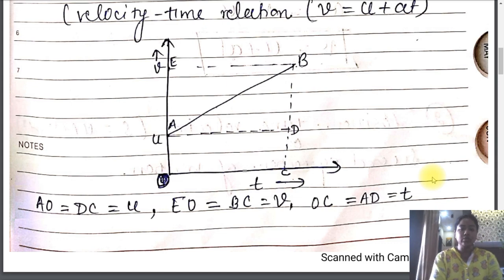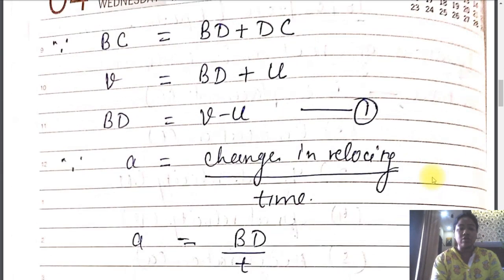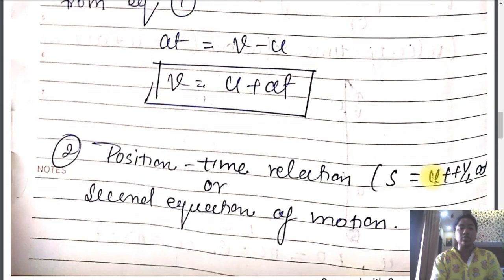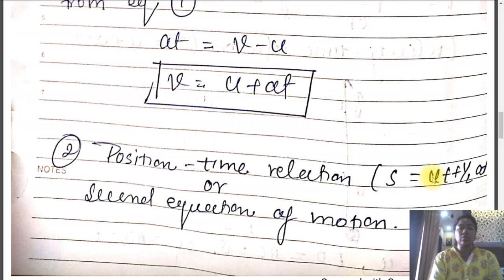Today we will talk about the next equation of motion — the second equation of motion. The second equation of motion gives us the relationship between position and time. That is why it is also defined as the position-time relation.